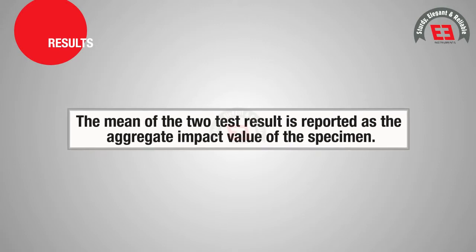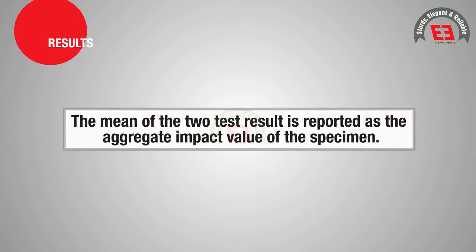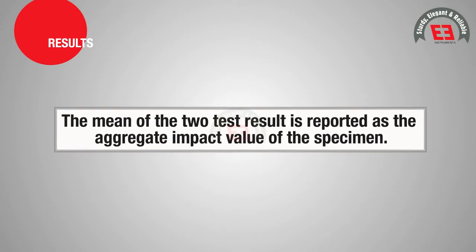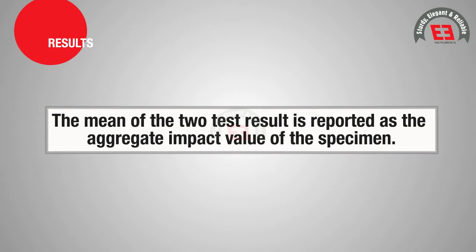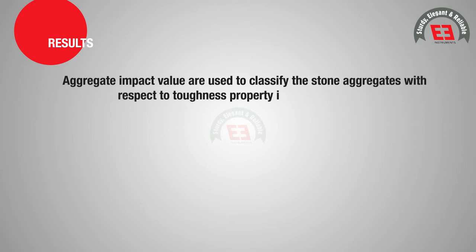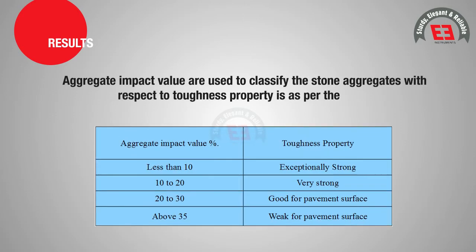The mean of the two test results is reported as the Aggregate Impact Value of the specimen. Aggregate impact values are used to classify stone aggregates with respect to toughness property as per the standard table.